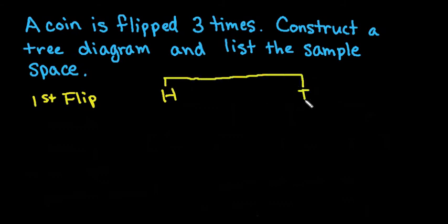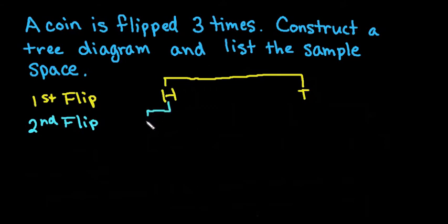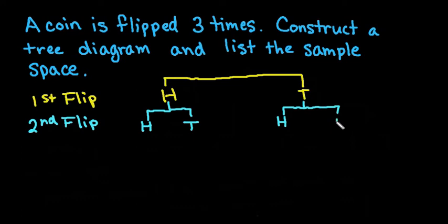What we get on the first flip doesn't have anything to do with what we get on the second one. So when I flip it a second time I can still get heads or tails. If I got heads on the first one, I can either get heads or tails on the second flip. Same thing if I started with tails.